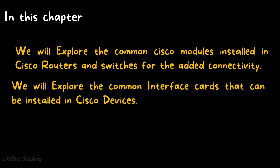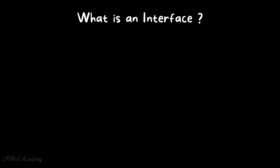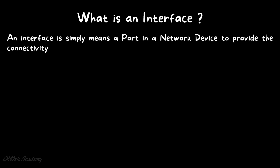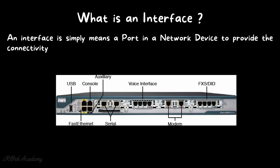We will explore the common interface cards that can be installed in Cisco devices, and explore blade supervisor engine interface modules in Cisco chassis switches. An interface simply means a port in a network device to provide connectivity. As shown in the picture, we can see a Cisco 2800 series router with multiple ports available — console interface, USB interface, voice interface, serial interface, and more.